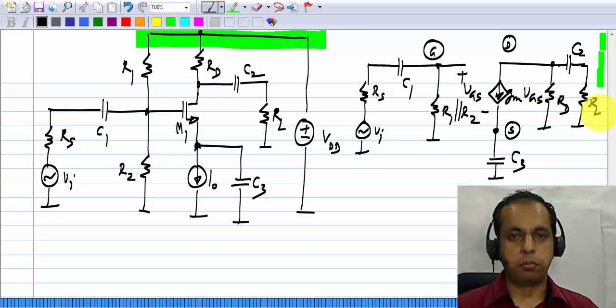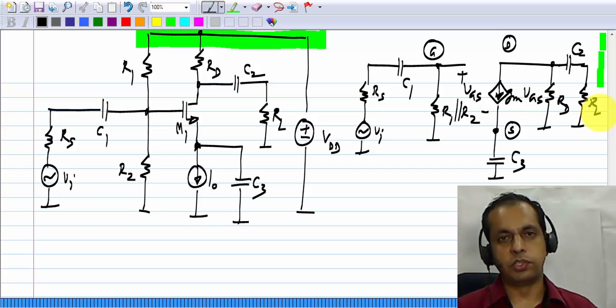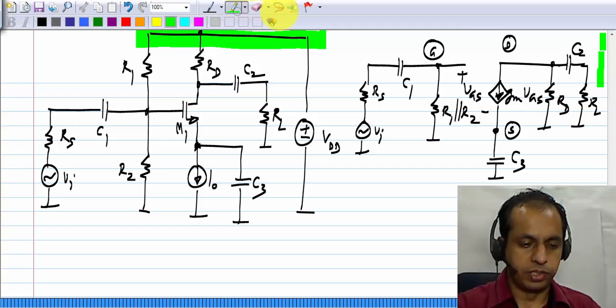So, this is the small signal incremental picture. And we have to make sure that C1, C2 and C3 are shorts at the center signal frequencies.